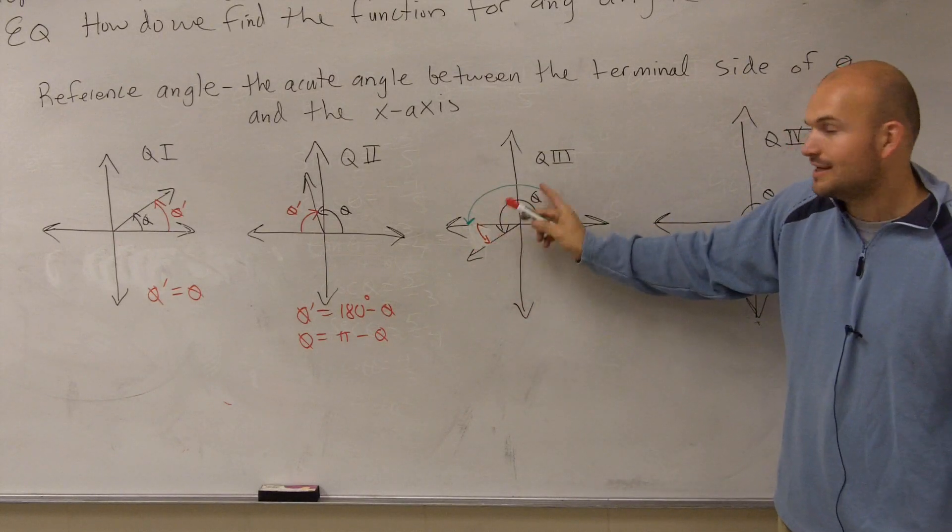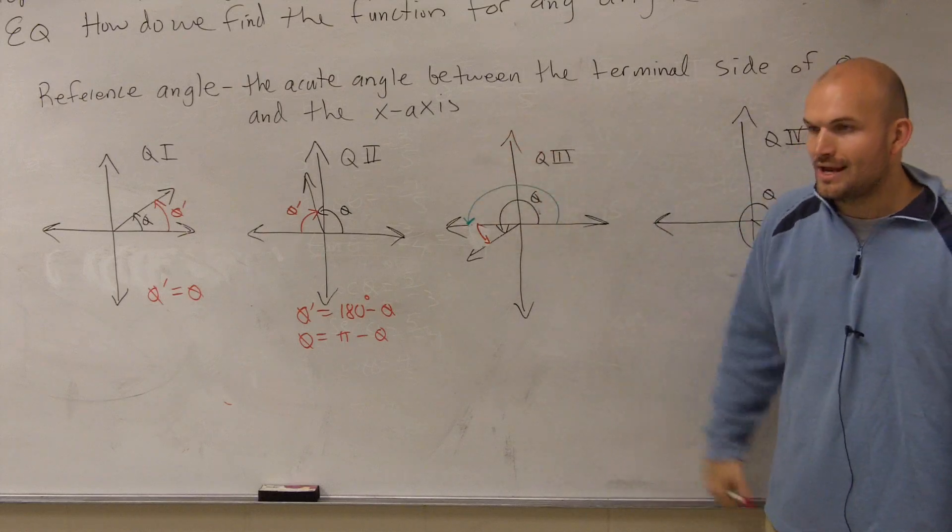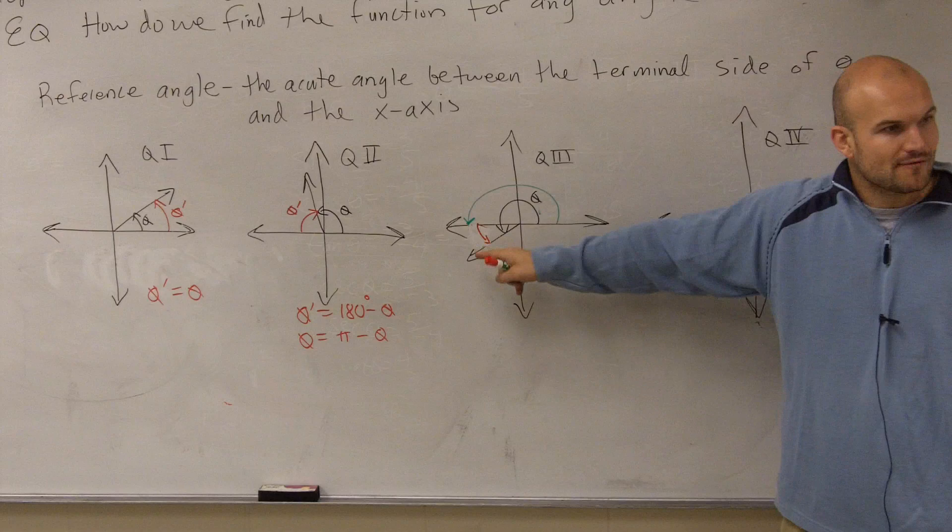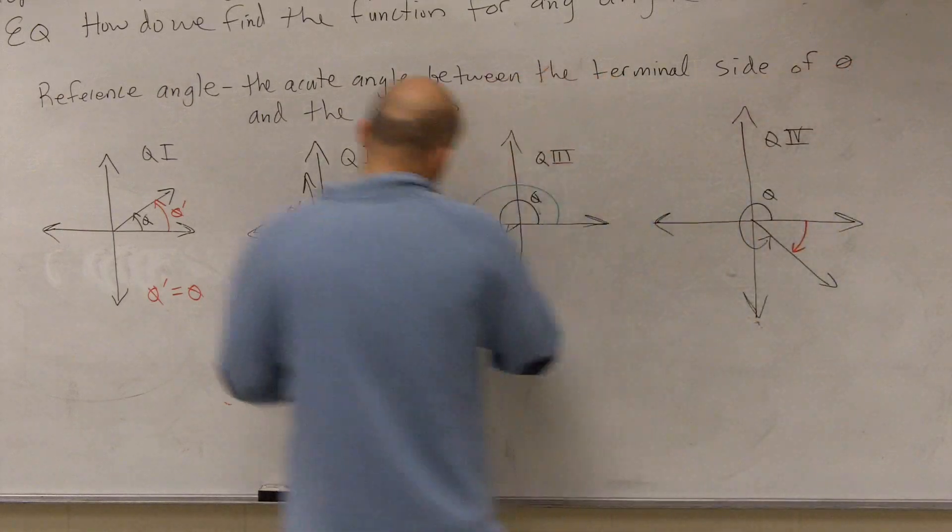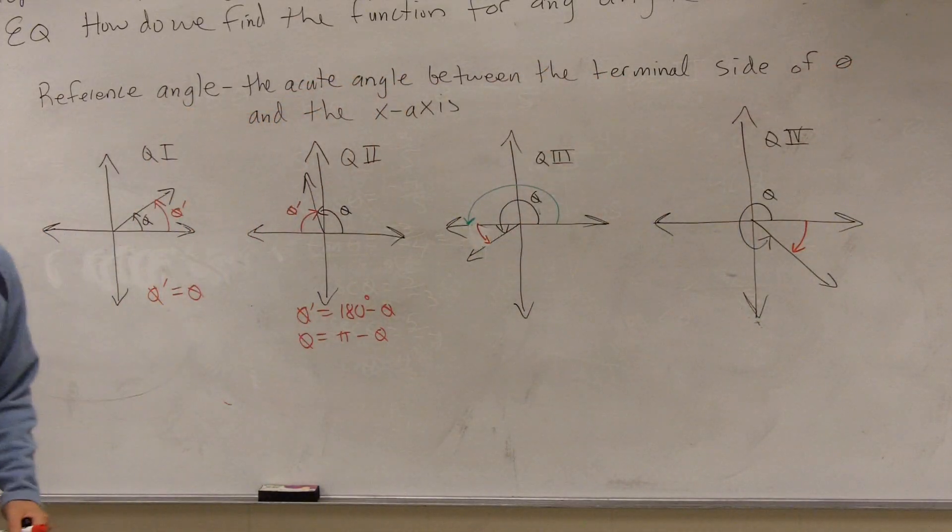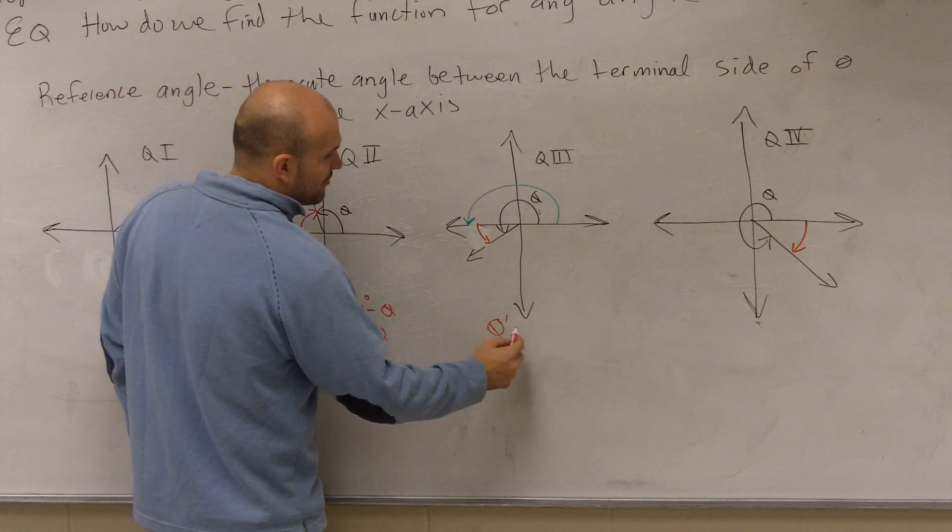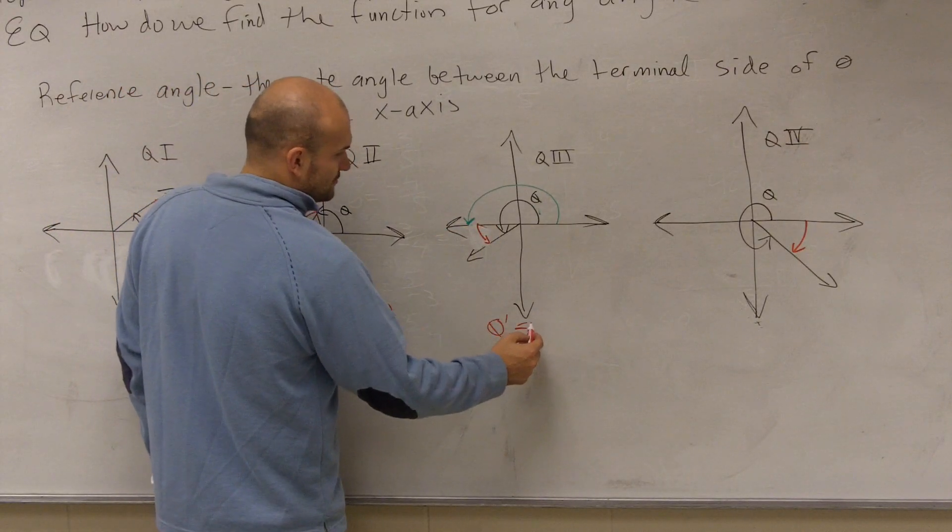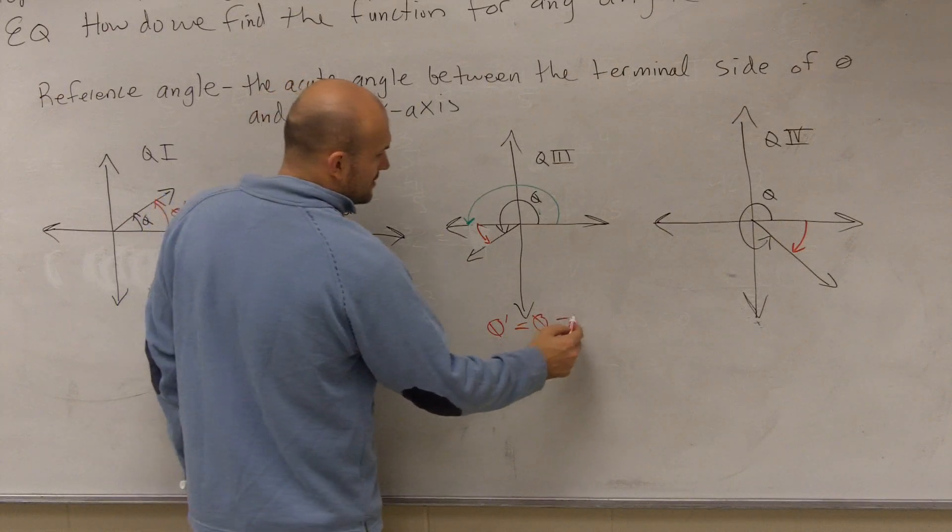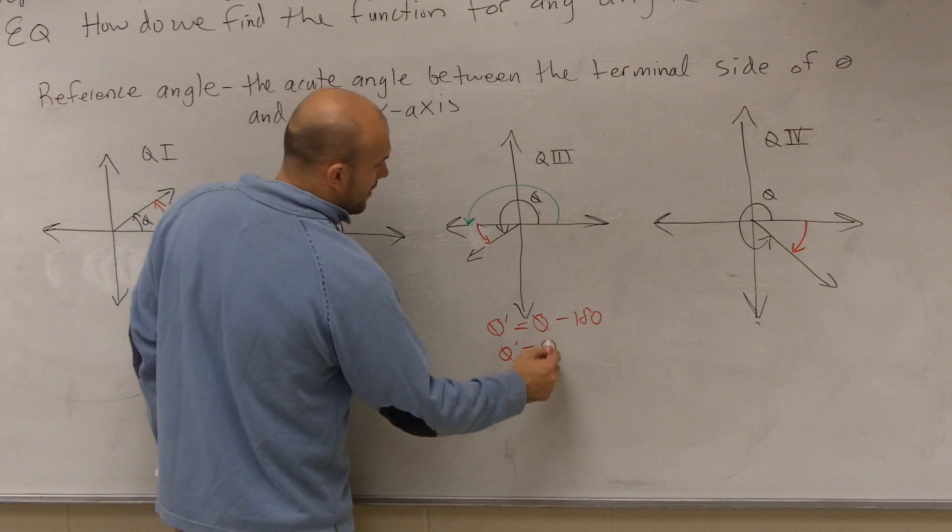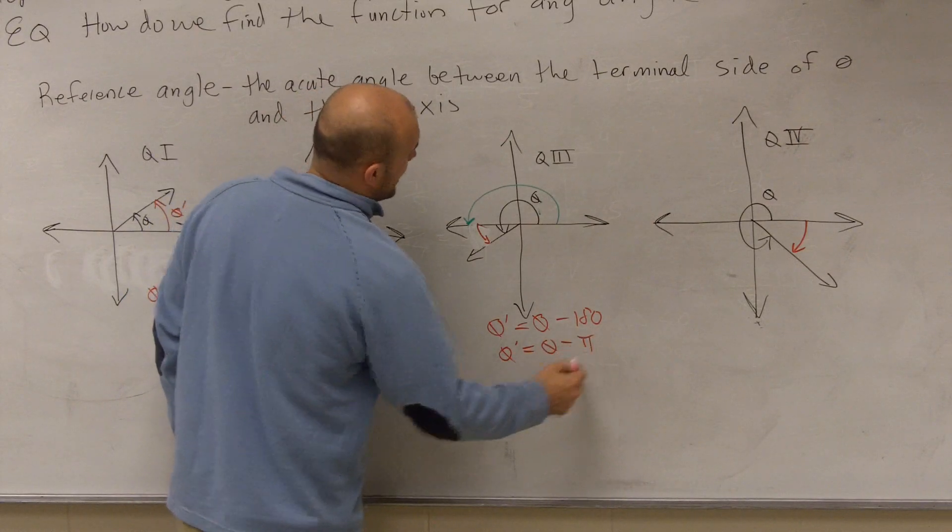If I take the black and subtract the green angle, what distance am I left with? My acute angle, my reference angle. So therefore, when given to you guys in the third quadrant, theta prime is equal to theta minus 180, or theta prime is equal to theta minus pi.